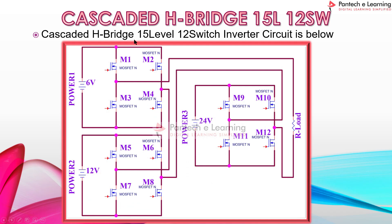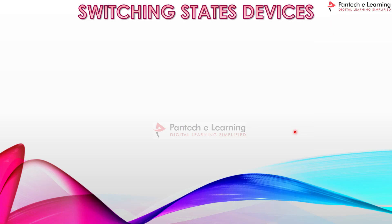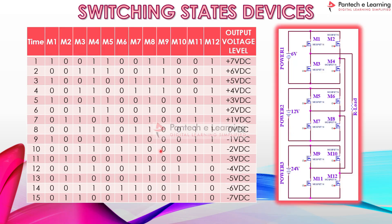Next, let's see the cascaded H-bridge inverter used in this project. The H-bridge 15-level inverter uses 12 reduced switches. There are three single-phase inverter circuits cascaded together to form the cascaded H-bridge 15-level inverter circuit. This is an asymmetric cascaded H-bridge inverter, so the voltage given to each individual inverter is varied: V, 2V, and 4V — here we have used 6 V, 12 V, and 24 V. The load is a resistive load, and we can check the waveform across it; the output waveform will be around 15 levels.